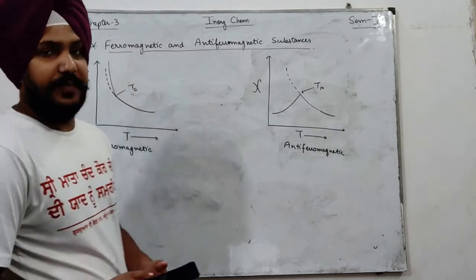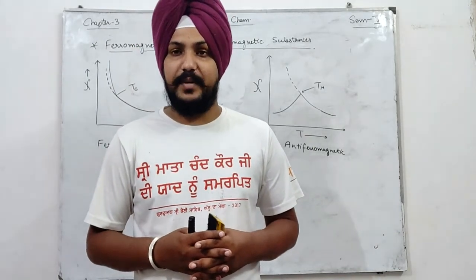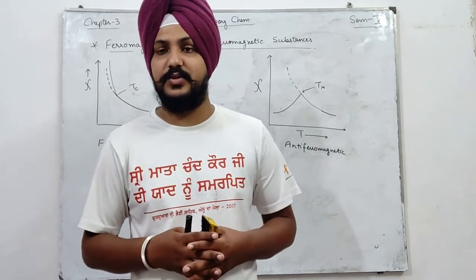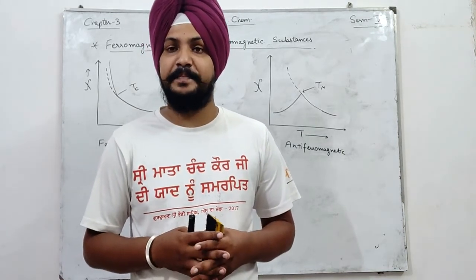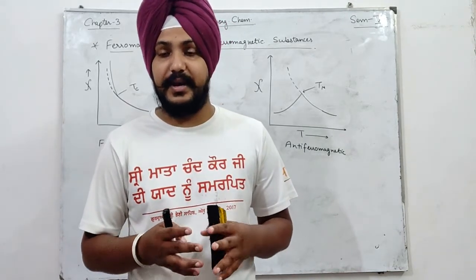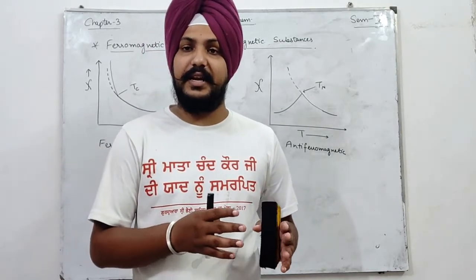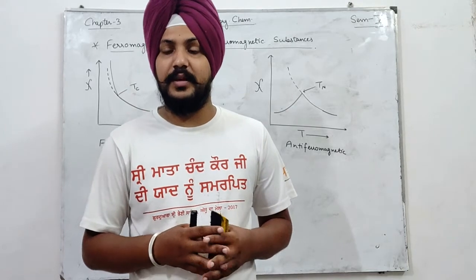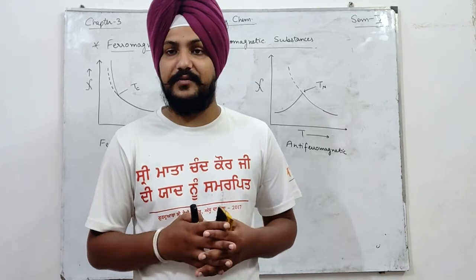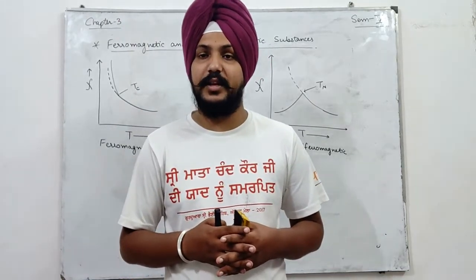जब हम magnetic properties की बात कर रहे थे तो मैंने आपको बताया था कि जो हमारे magnetic substances होती है या transition metal complexes होती है, यह हमें basically दो type का behavior show करती है — paramagnetic और diamagnetic. Paramagnetic substances वो होते हैं जो weakly attracted by the magnetic field होती है, मतलब magnetic field पर place करने से थोड़े attract हो जाती है।